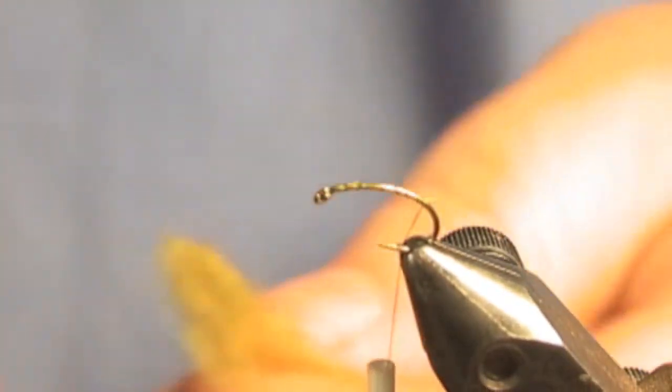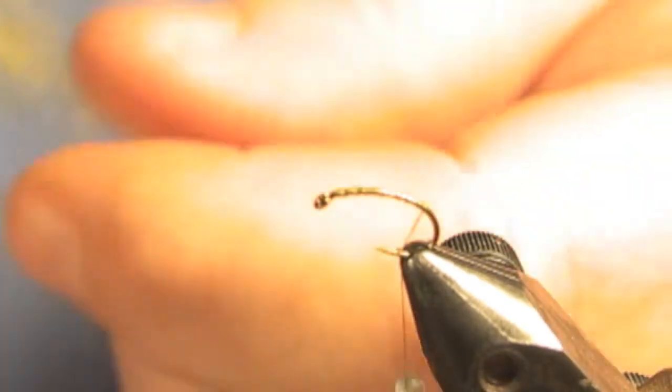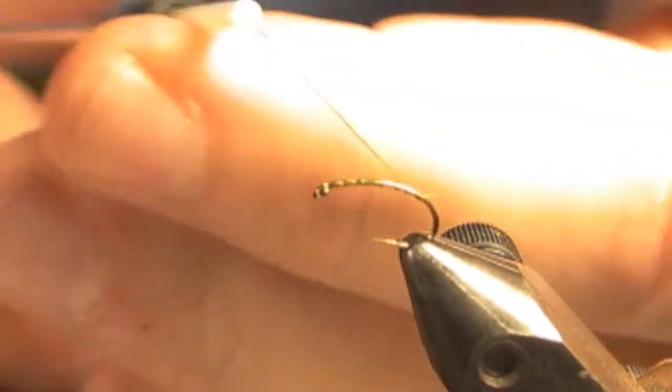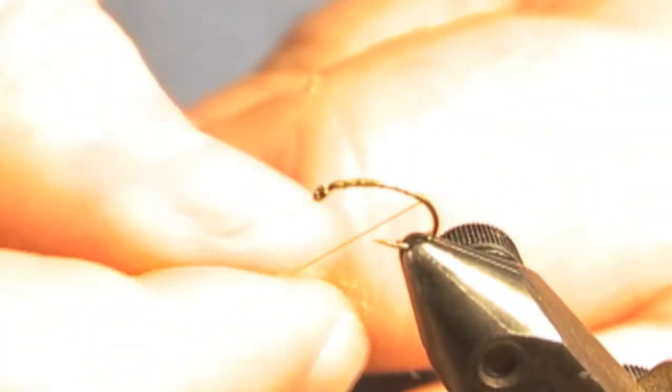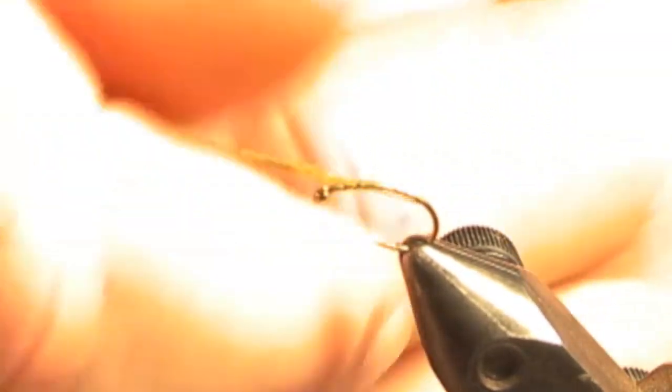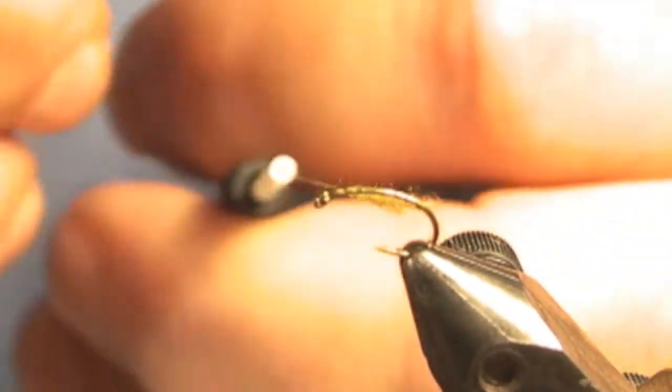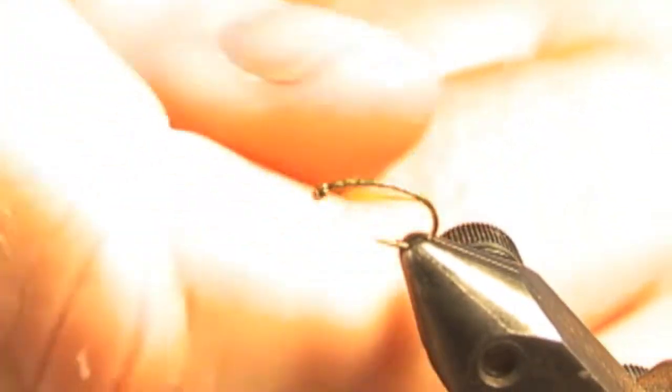It's just a nice green color. Notice I have a big hunk here. You don't need that much. As Dick said, they're not tapered bodies. You're just looking for a cigar shape. You put the dubbing on the thread and get a nice even body all the way up.